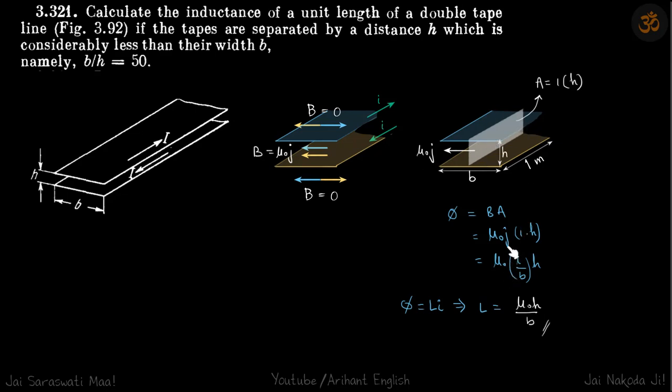J, the linear current density, is i by b. Current i is flowing through length b, so it's i by b. Now comparing this with phi equals LI, we get the inductance as mu not h by b, which is our answer.